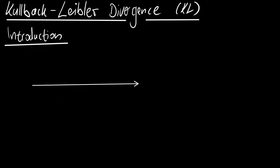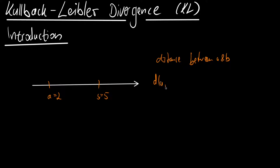Assume you have numbers on the real line. Let's say you have an a with value two and a b which is five — two variables. Your task is to find the distance between a and b. What you would probably do is say the distance measure is |a minus b|, taking the absolute value. And that's correct — that allows you to infer how far they are apart.